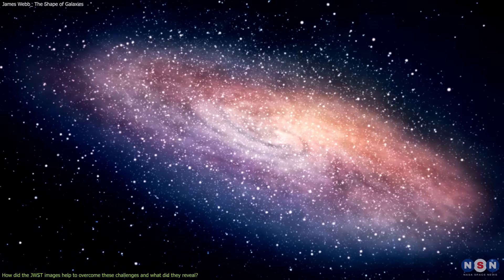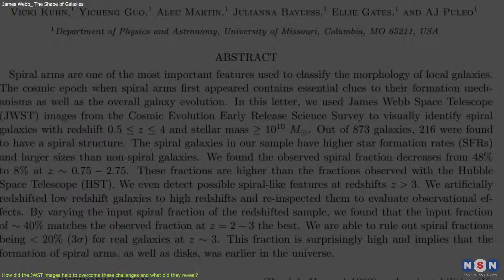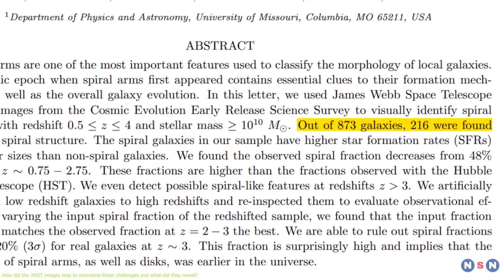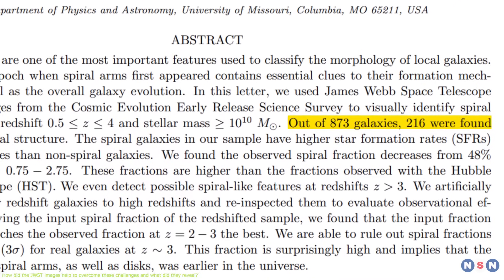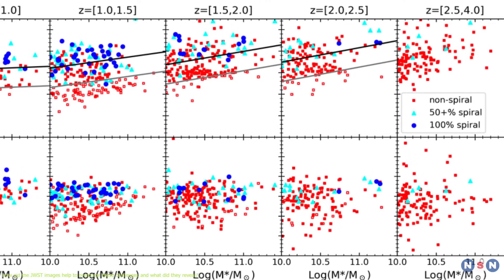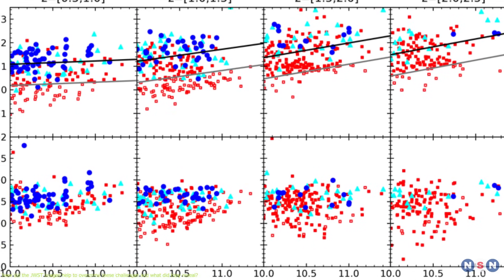They found that out of the 873 galaxies, 216 were classified as spiral galaxies, with a spiral vote of at least 3. This means that about 25% of the galaxies in the sample were spiral galaxies.